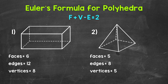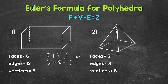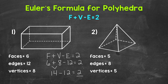Let's go through a couple of examples and plug in the number of faces, vertices, and edges to show that this formula is true. Starting with number one, a rectangular prism — six faces, twelve edges, and eight vertices. Plugging into the formula: six faces plus eight vertices minus twelve edges equals two. Six plus eight equals fourteen, and fourteen minus twelve gives us two. So six plus eight is fourteen — that's two more than the number of edges.